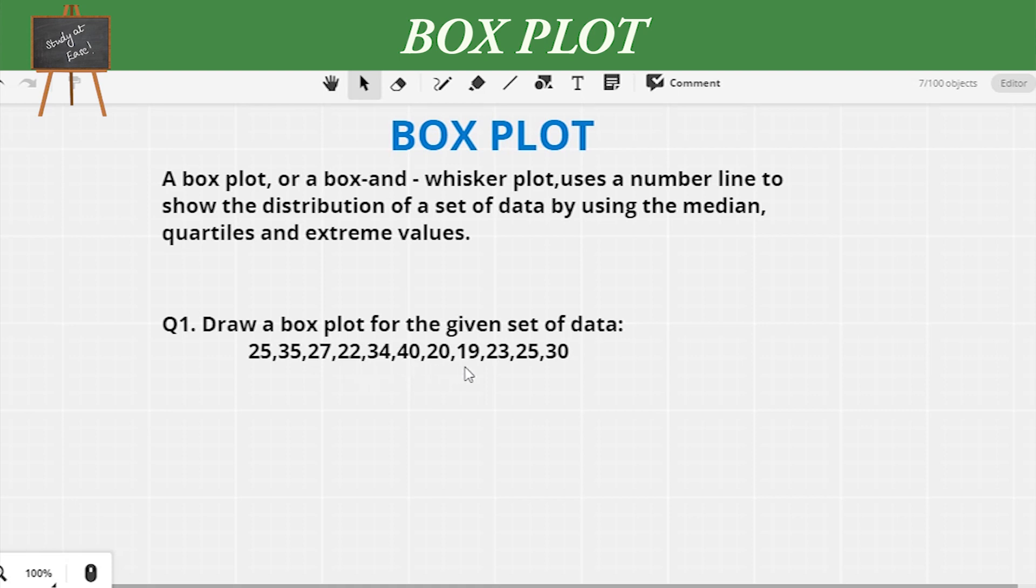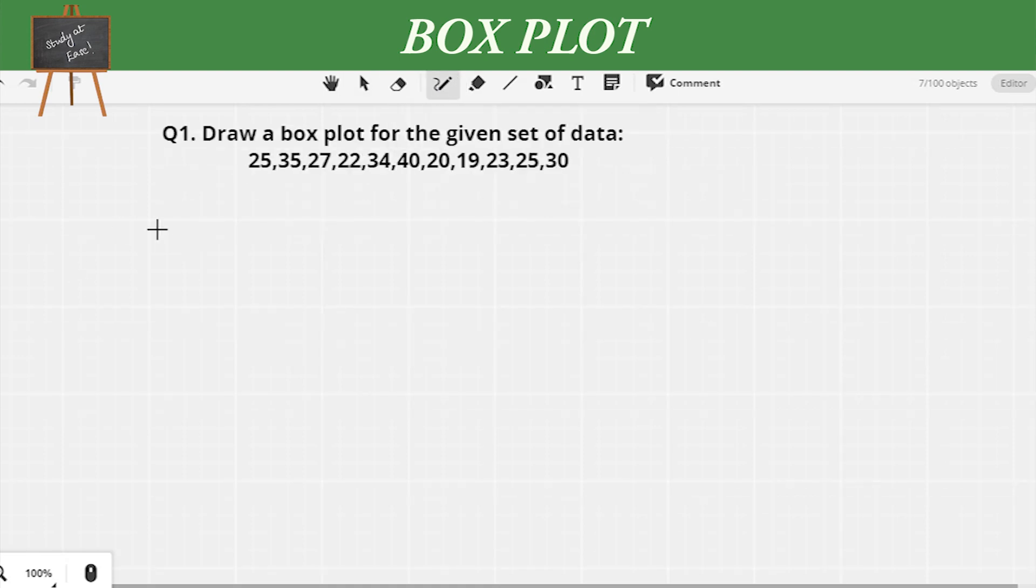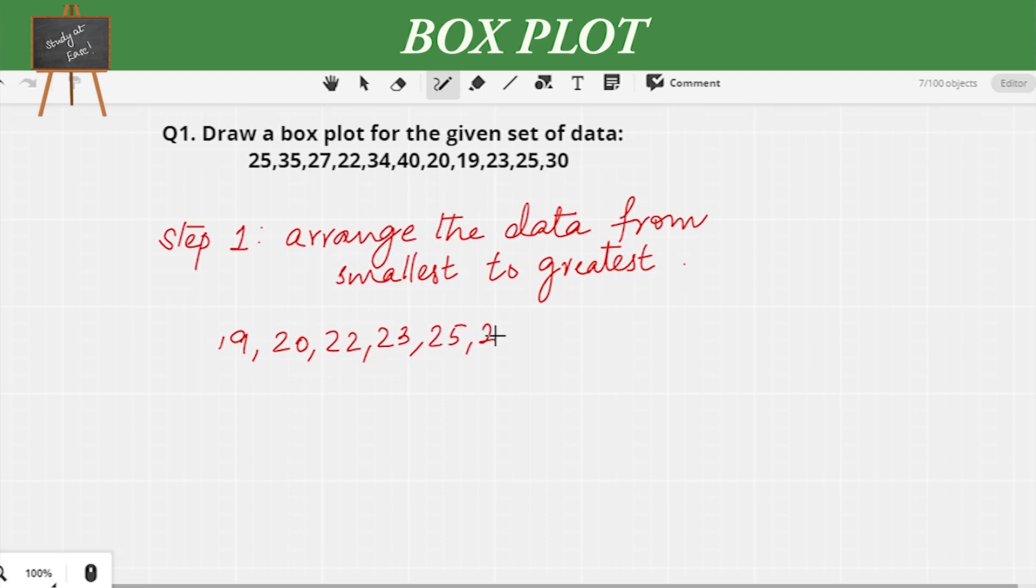Step 1: Arrange the numbers in ascending order, from smallest to greatest. So here we go: 19, 20, 22, 23, 25, 25, 27, 30, 34, 35, and 40.